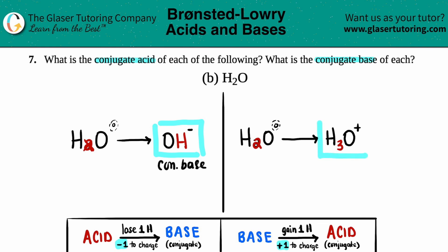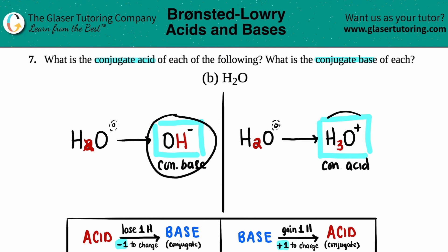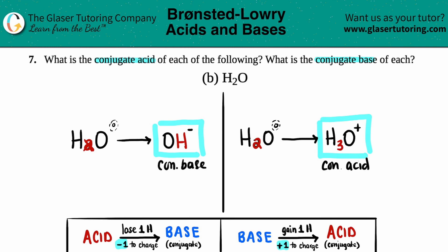That is your conjugate acid. These are going to be super important throughout this whole chapter. OH⁻ is hydroxide — memorize this, we're going to be seeing hydroxide all over the place. And H3O⁺ is hydronium, the conjugate acid of water. We could also see hydronium as just H⁺, as in earlier questions, and they are equivalent in what they do.